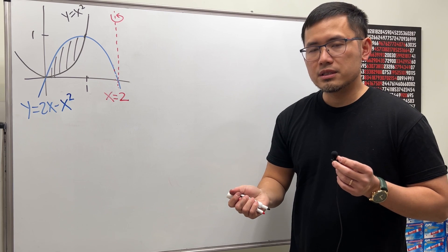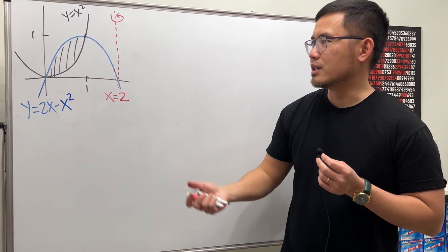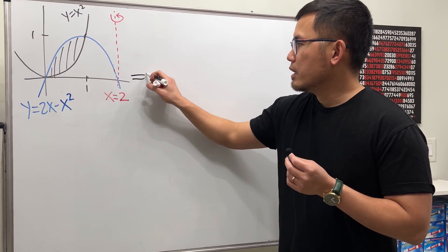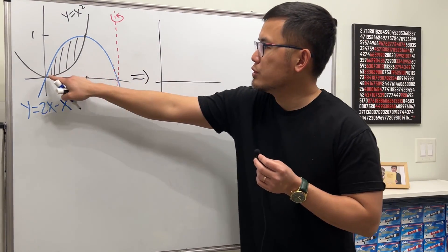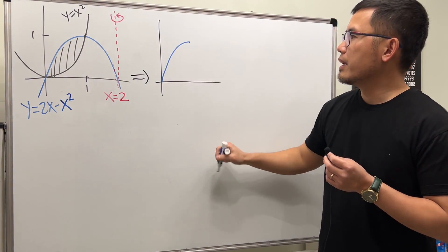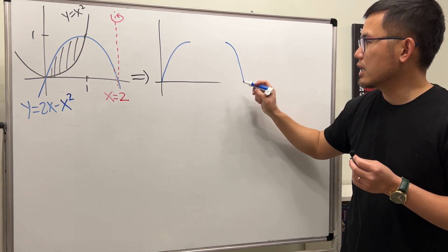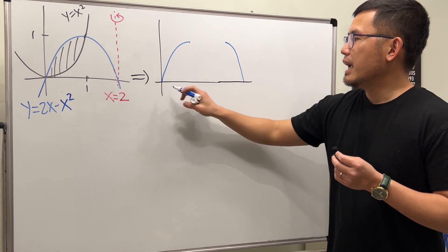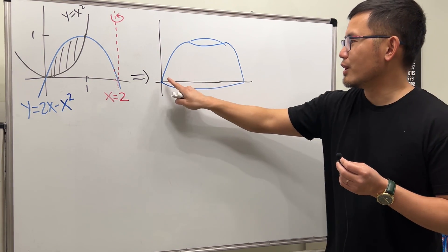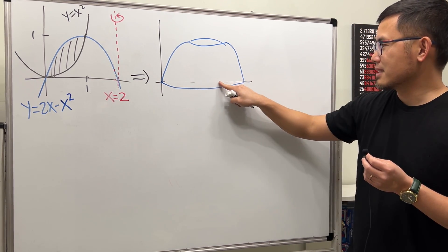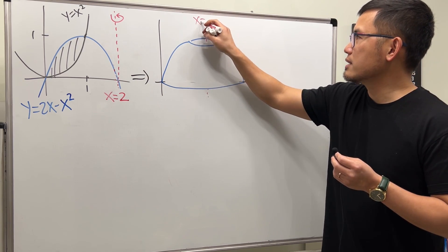Let's do the washer method first. The washer method is just a disk method minus another one, because we have a missing part in the middle. After the rotation, I'll take the outer part first — there's going to be a gap — and I'll mirror the image to make it three-dimensional. Remember, this is the axis of rotation: x = 2.